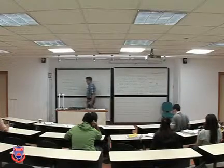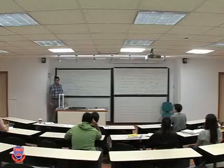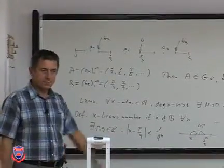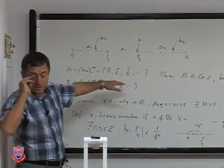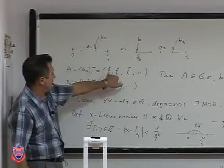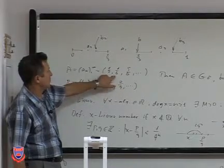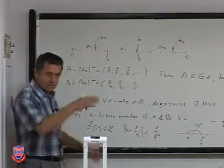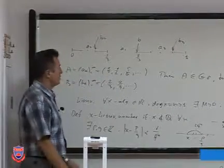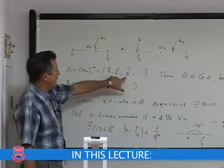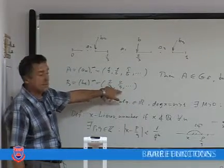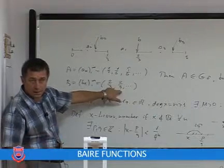Now we consider the following problem. We consider two sequences given by the Cantor set, using the usual standard Cantor procedure. The first sequence is given by the midpoints of complementary intervals, enumerated in natural order. The second sequence consists of the right endpoints of these complementary intervals.